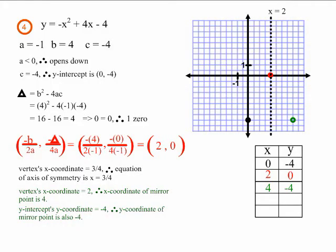This is what example four looks like after finding the mirror point. Be sure to watch the next video in the process of graphing a parabola — finding the roots, or the x-intercepts, or the zeros.